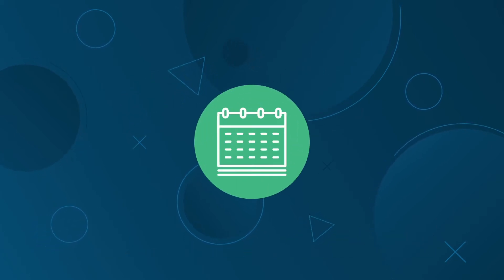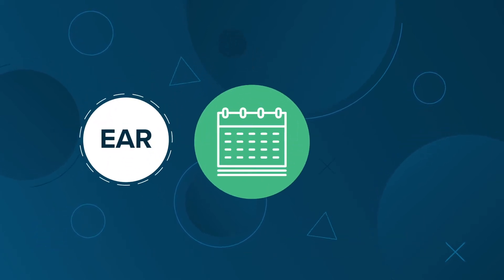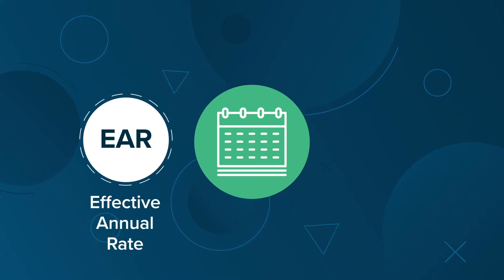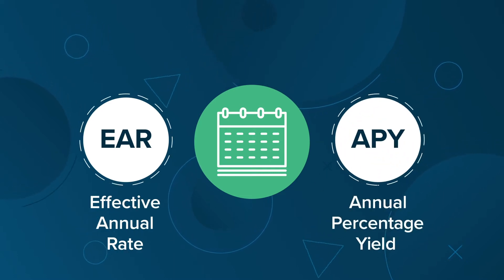Factoring in compounding interest that happens within a year gives you a loan's EAR, or Effective Annual Rate, sometimes also called APY, or Annual Percentage Yield.